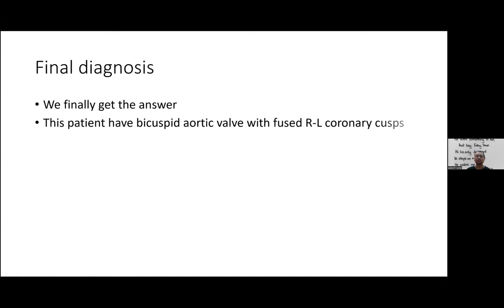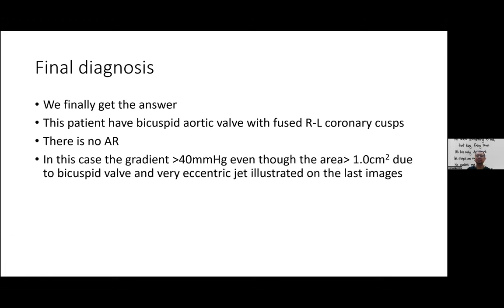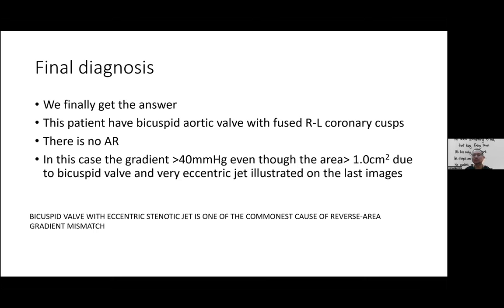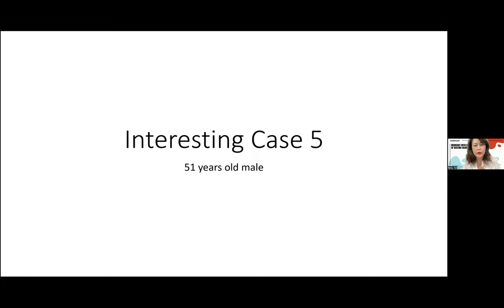Summary of case four: fusion of right and left coronary cusps — bicuspid aortic valve, no aortic regurgitation. Even though AVA is more than 1 cm², mean gradient is more than 40 mmHg because of the eccentric stenotic jet from the bicuspid valve. Bicuspid valve with an eccentric stenotic jet is one of the commonest causes of reverse area-gradient mismatch — an entity clinicians need to be aware of.